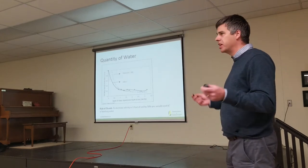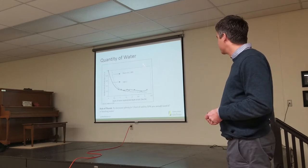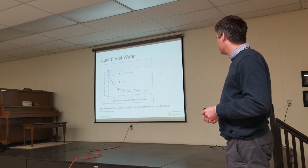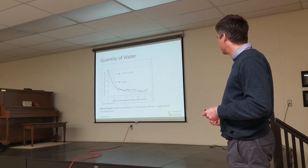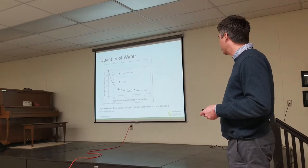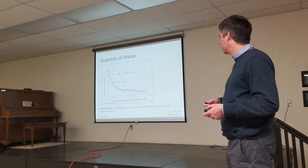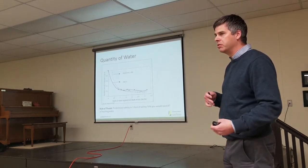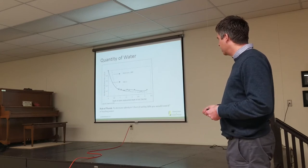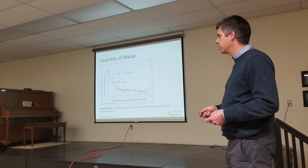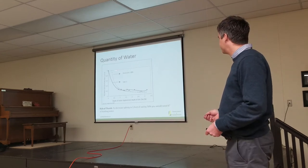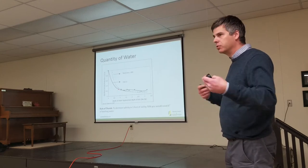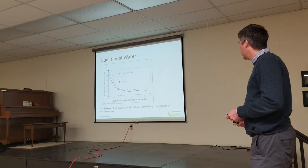If you don't take anything else from my presentation today, just take this: it takes a lot of water to leach salts downwards. It's not going to be one or two inches and your soil is reclaimed. The rule of thumb is to decrease salinity in one foot of soil by 50%, you need six inches of leaching water applied through that soil. So if you have an ECe of 8 in your top foot and you want to bring it down to 4, you need at least six inches through that foot. Your root zone is three to four feet, so a lot of water has to go through these soils.